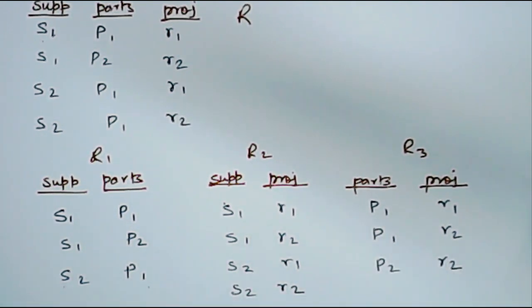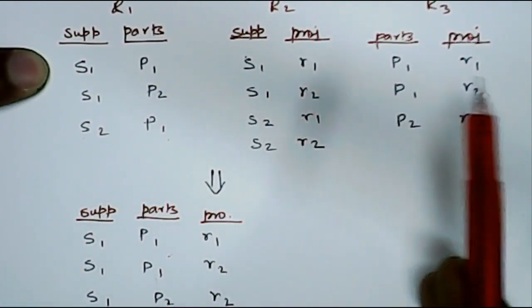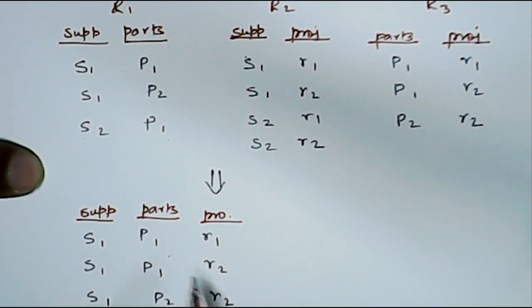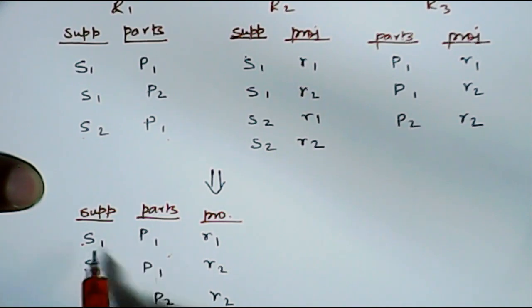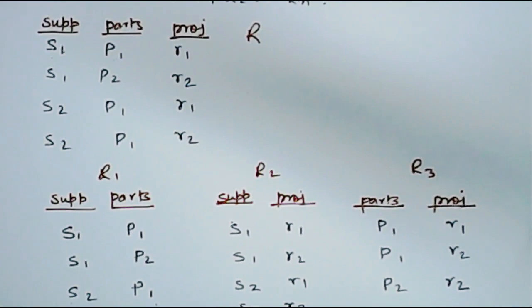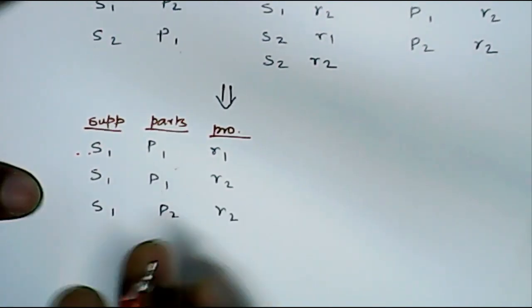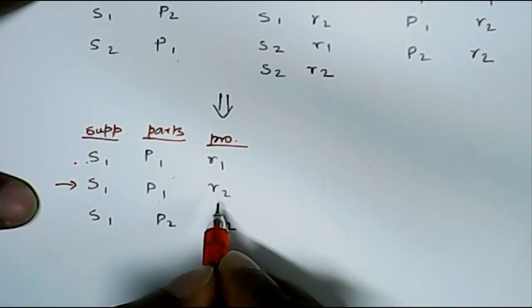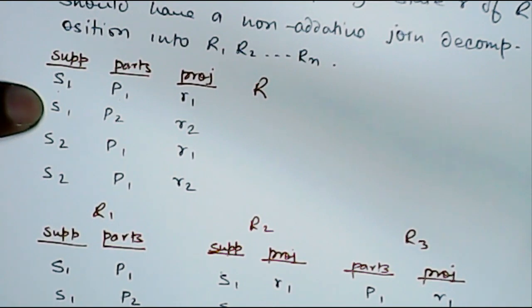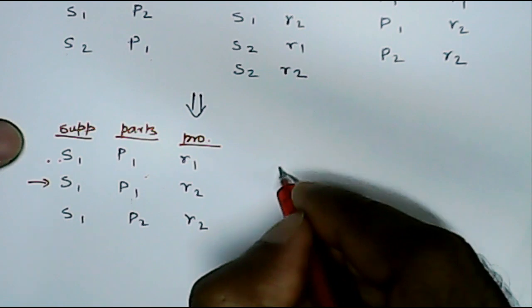This is the breakdown of relation R into R1, R2, and R3. Once we join R1, R2, and R3, we will get this table back. But if you see here carefully, this row S1 P1 and R1 is fine because it was in the original table. But this S1 P1 and R2 is an extra row which is not present in the parent table.